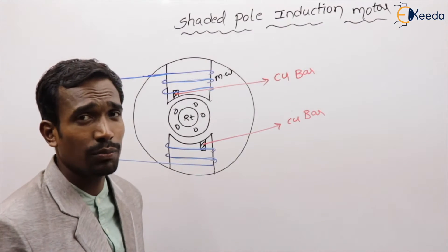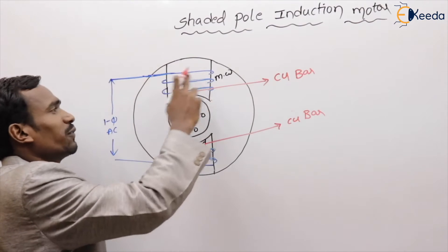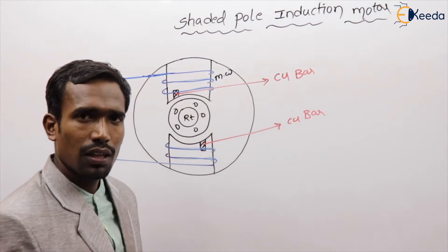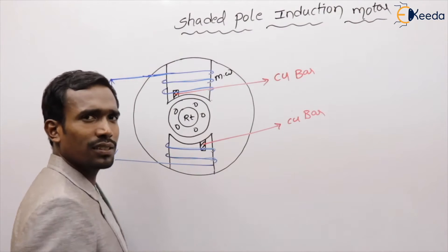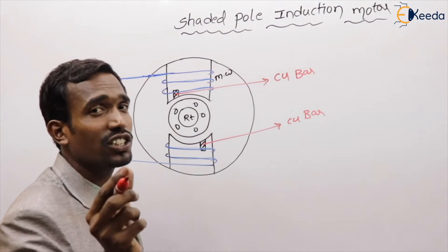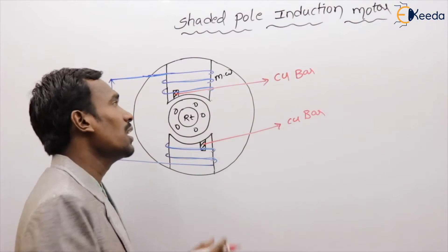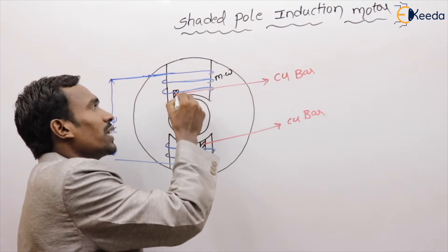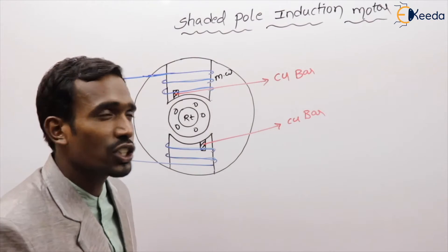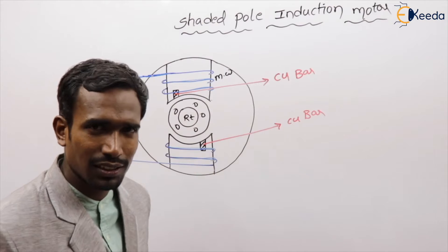How can we start the motor? Actually when we give single phase AC supply to the main winding, it produces flux. Due to mutual induction, the flux will be produced in the shaded rings.